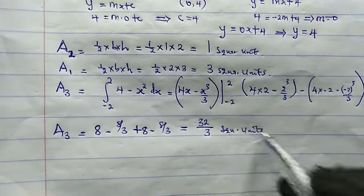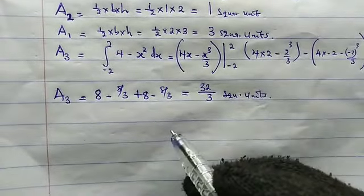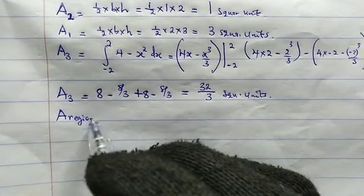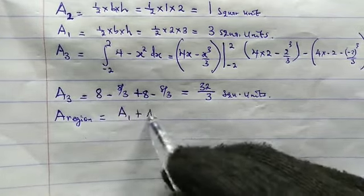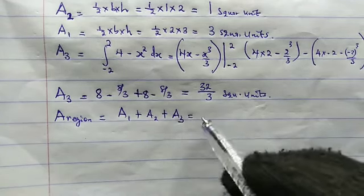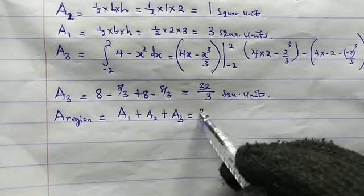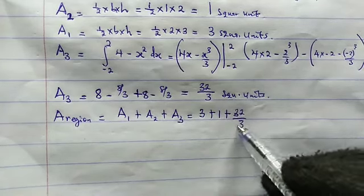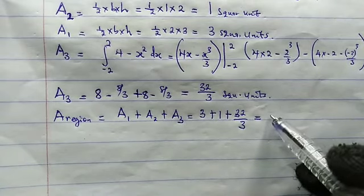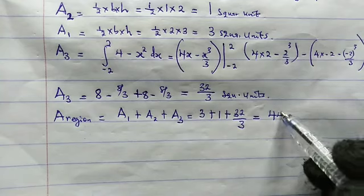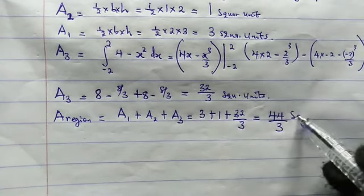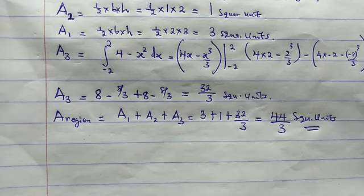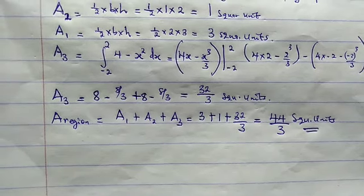Combining all areas: Total Area = Area 1 + Area 2 + Area 3 = 3 + 1 + 32/3 = 44/3 square units. That's the right answer. Thank you for watching — please remember to subscribe to my channel, and also like, comment, and share. Bye!